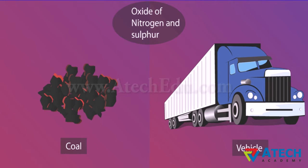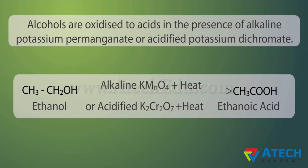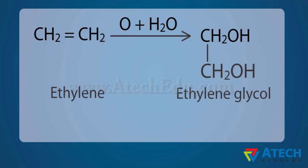Oxidation is the reaction in which carbon compounds take up oxygen in the presence of oxidizing agents to give another carbon compound. The substances which are capable of adding oxygen to others are called oxidizing agents. Alcohols are oxidized to acids in the presence of alkaline potassium permanganate or acidified potassium dichromate. Ethanol gets converted to ethanoic acid. Here the oxidizing agents are alkaline potassium permanganate or acidified potassium dichromate.